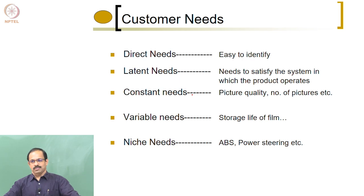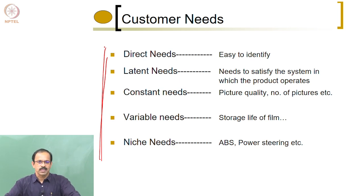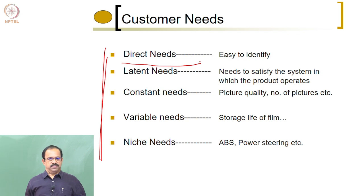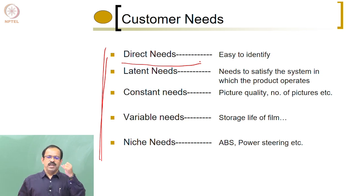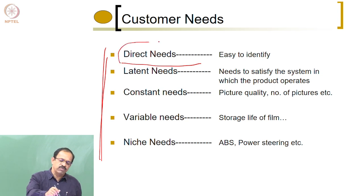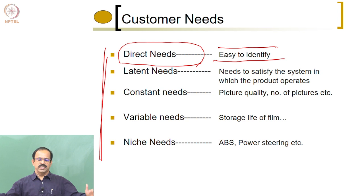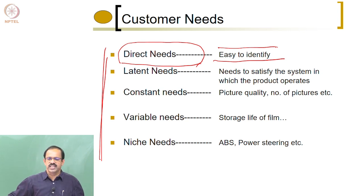What are the customer needs that you can have? The customer needs can be classified into five categories. The first is known as the direct needs of a customer. If you ask the customer, they will tell you clearly — 'I need a 12 megapixel camera, I should be able to play video on my phone, I should be able to send messages, connect to internet, Wi-Fi.' Such needs are known as direct needs of the customer, which are very easy to identify. Just ask them, they will tell you what they need.